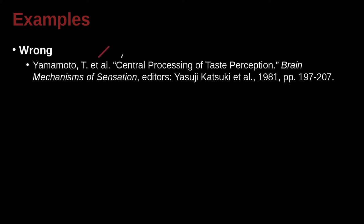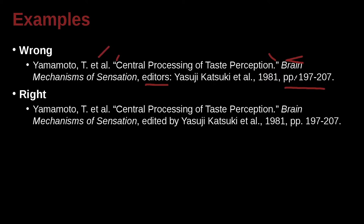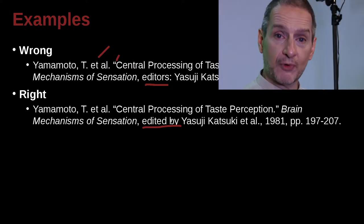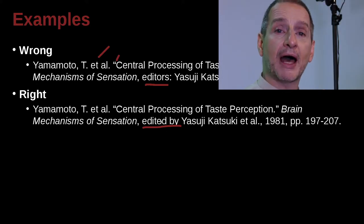Yamamoto T., et al. — three or more authors. The article 'Central Processing of Taste Perception' is inside a book called Brain, Mechanisms of Sensation — not a journal, but a book with editors, published in 1981, with specific page numbers for the chapter being cited. The correct way to write this in MLA is 'edited by,' not just 'editor.' MLA is very clear that you must write out 'edited by.'